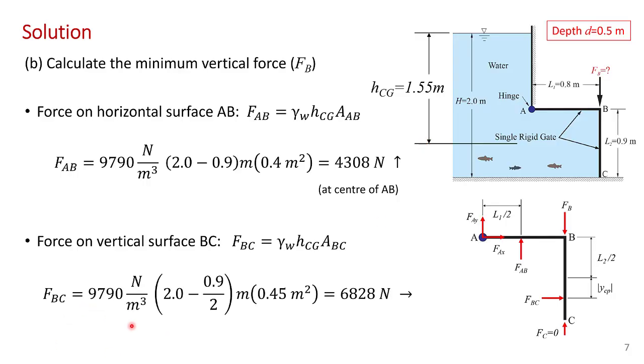The specific weight of water, here's our 1.55 meters, the depth of the centroid of that surface. And then the surface length L2 is 0.9 meters, the depth is half a meter. So the area is 0.45 meters squared. Performing the multiplication, we get 6828 newtons acting to the right.